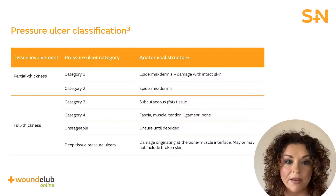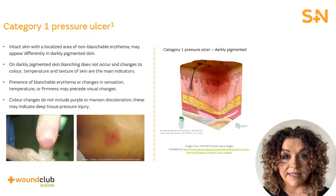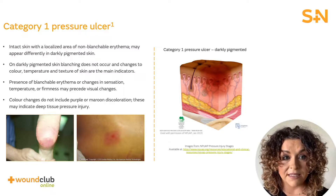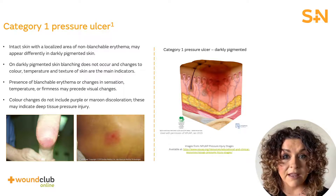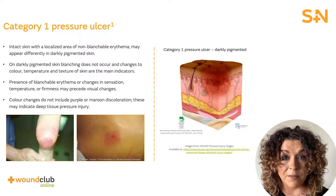It's important to remember that the tissue involvement is not necessarily an indicator of wound depth. For example, a shallow wound over the malleolus may have exposed bone. Category 1 pressure ulcers are those with the skin remaining intact. This is characterised by an area of local non-blanching erythema. It's worth noting that on darkly pigmented skin, this may appear differently. There may also be changes in sensation, temperature or firmness of the skin.